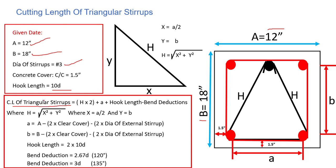The formula is h into 2, where h is the diagonal distance of the triangular side. We have two sides, so h×2. Plus a — which is the horizontal dimension from one end to the other — from which we deduct concrete cover from both ends and the dia of the external stirrup as well.